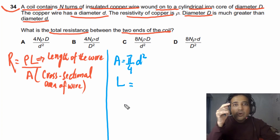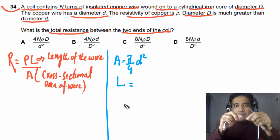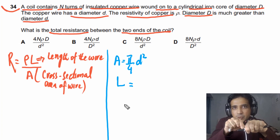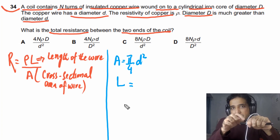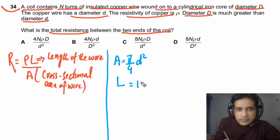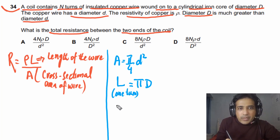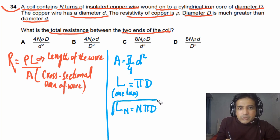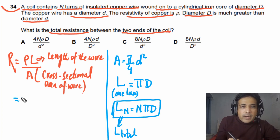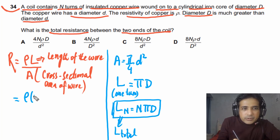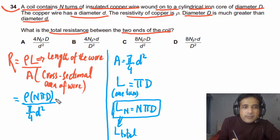The length of one turn of wire wound on the iron core of diameter capital D is equal to π × D — the circumference. For N turns, the total length L equals N × π × D. Substituting into R = ρL/A: R = ρ × (N π D) divided by (π/4 × d²).